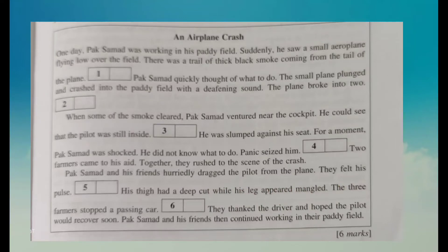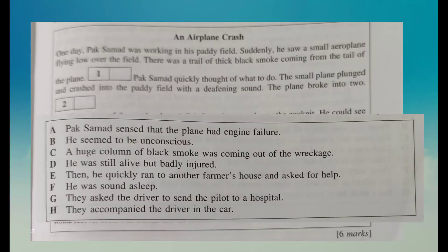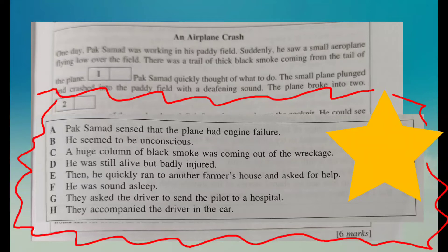Now let's move on. Pak Saman quickly thought of what to do. The small plane plunged and crashed into the paddy field with a deafening sound — 'deafening' means very loud. The plane broke into two. So what happened next? Imagine in your head a plane crash that broke into two. Then the next thing that happened — yes, bingo — a huge column of black smoke was coming out of the wreckage. So the answer is C.